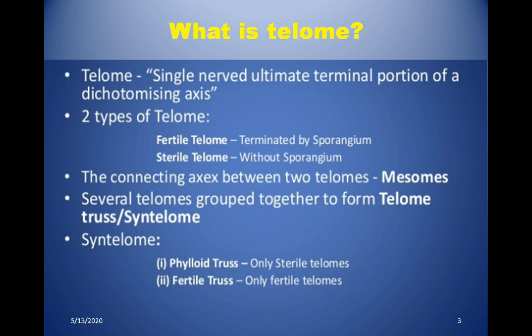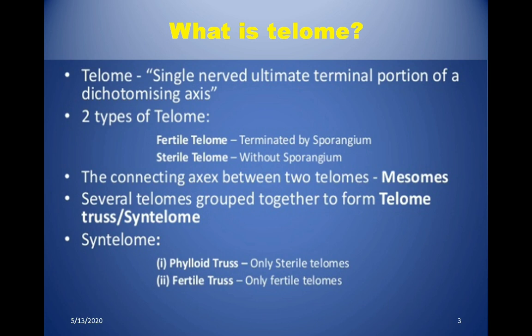Telomes are of two types. The first is a telome that does not end in a sporangium, known as a sterile telome. The second is one that ends in a sporangium, known as a fertile telome. The connecting axis between two telomes is known as a mesome. When several telomes group together, they form a telome truss, which is mainly of two types: the phylloid truss, where only sterile telomes are present, and the fertile truss, where only fertile telomes are present.